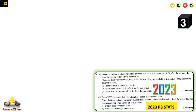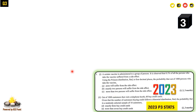The third question reads — if you have not watched the previous two questions, click on the links below to see questions one and two. Question 3 sub-1: A certain vaccine is administered to a group of persons. It is observed that 0.1% of all persons who take the vaccine suffer from a side effect. Using the Poisson distribution, find to four decimal places the probability that out of 1000 persons who take the vaccine: (a) none suffer from the side effects, (b) exactly two persons suffer from the side effects, (c) more than two persons suffer from the side effects. This part is worth eight marks.